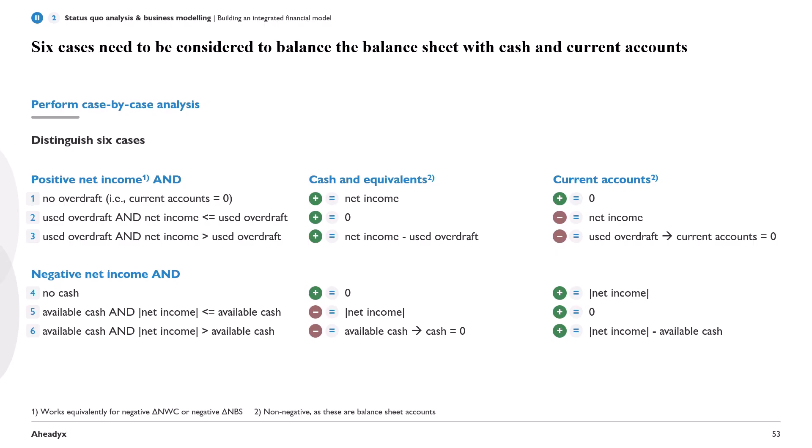In terms of notation, note that I'm using plus-equals and minus-equals, which just means that, for example, cash and equivalents is equal to cash and equivalents plus net income. Here in this first example, our counter-accounts are equal to counter-accounts plus zero.